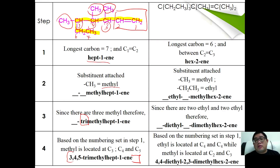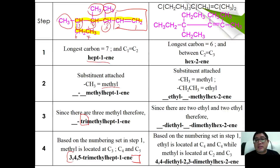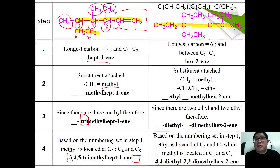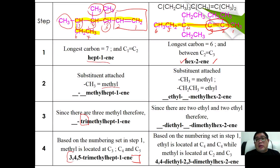For the second example, given a condensed formula, we suggest students to first expand it, then identify the parent chain. The parent chain appears to be a straight chain with six carbons. To identify the C=C position, we number them one through six: the C=C is located between C2 and C3, therefore the parent chain is hex-2-ene. We always take the smallest number for the C=C.